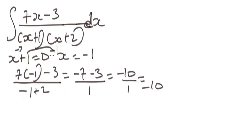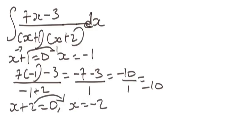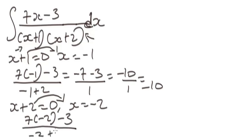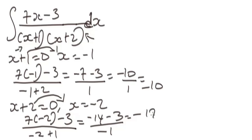Now equate x + 2 to zero, giving x = -2. Substitute -2 into the expression but don't substitute it into the factor (x + 2). So we get: 7(-2) - 3 over (-2 + 1), which is -14 - 3 over -1, giving -17 over -1. The negatives cancel, so we get 17.